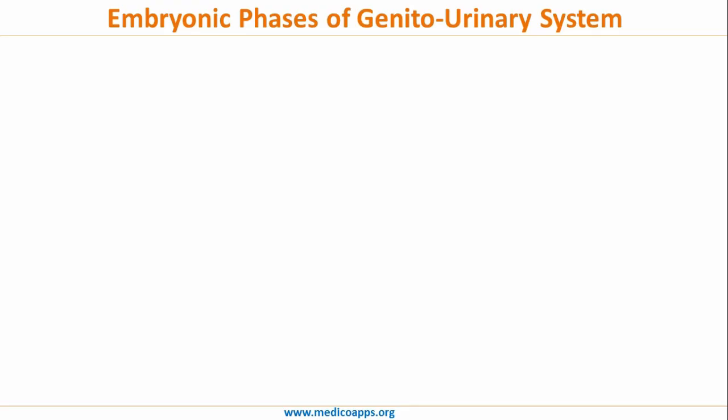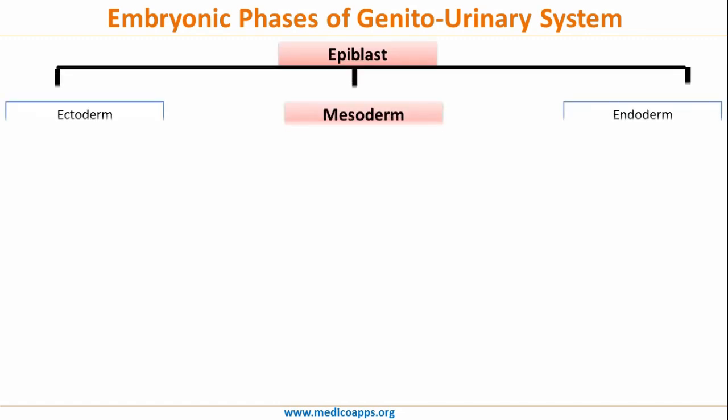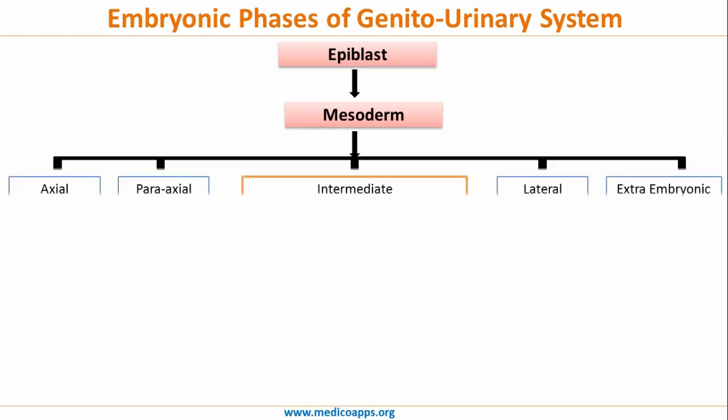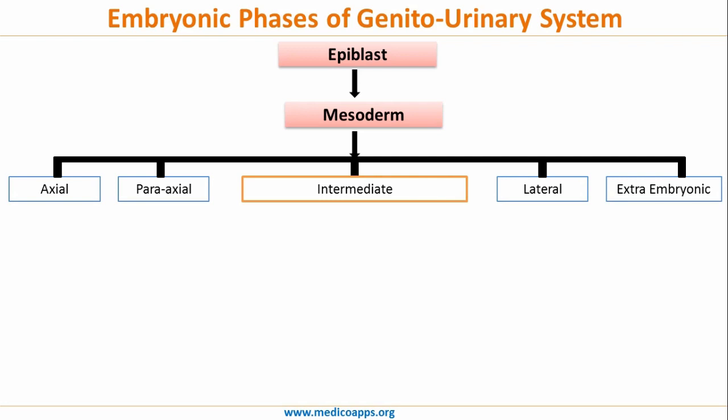Let's now look at the flowchart to understand the embryology of the genitourinary system. From the epiblast, we have the ectoderm, the mesoderm, and the endoderm. The mesoderm further divides into the para-axial, the axial, the intermediate, the lateral, and the extraembryonic.